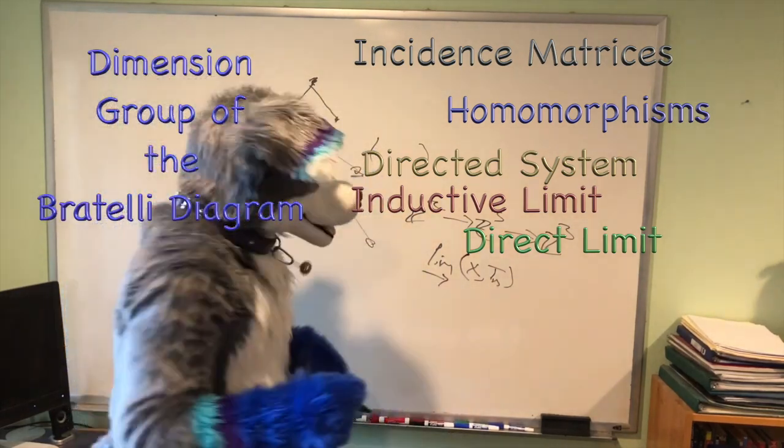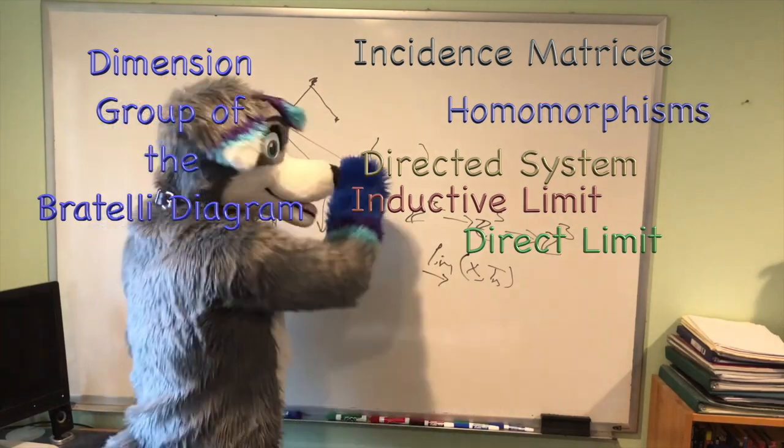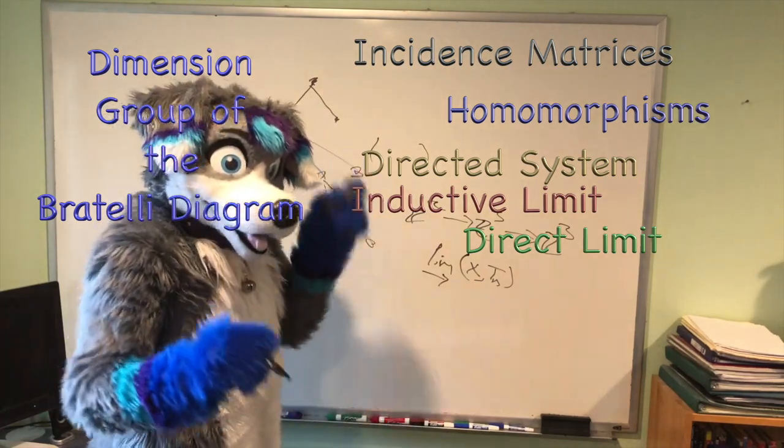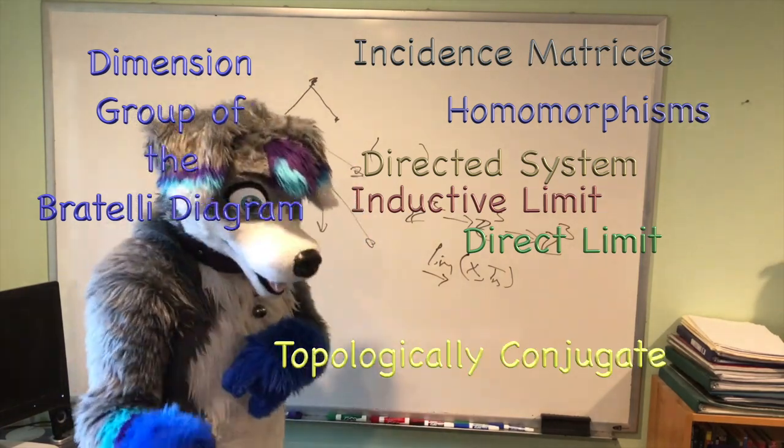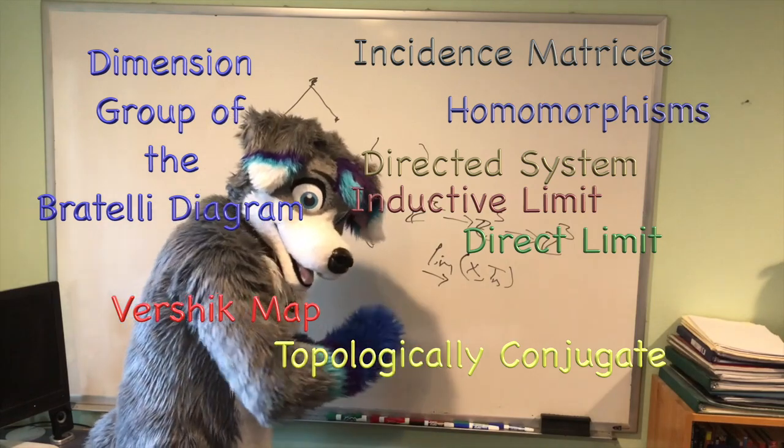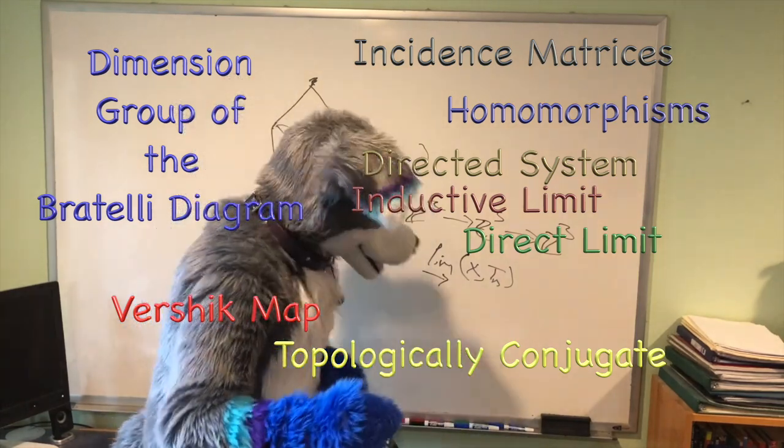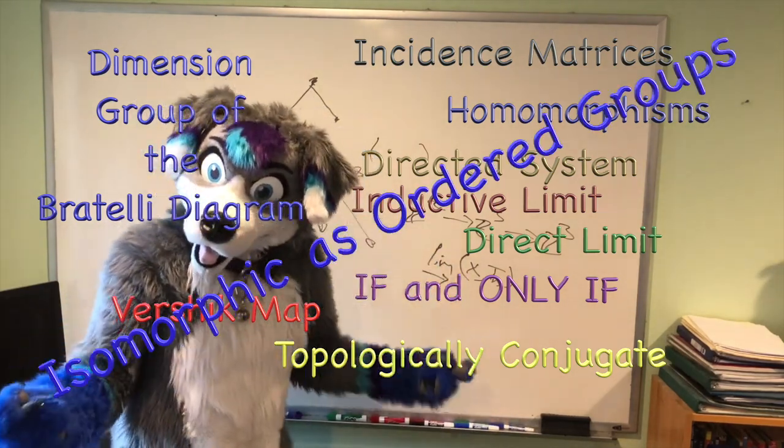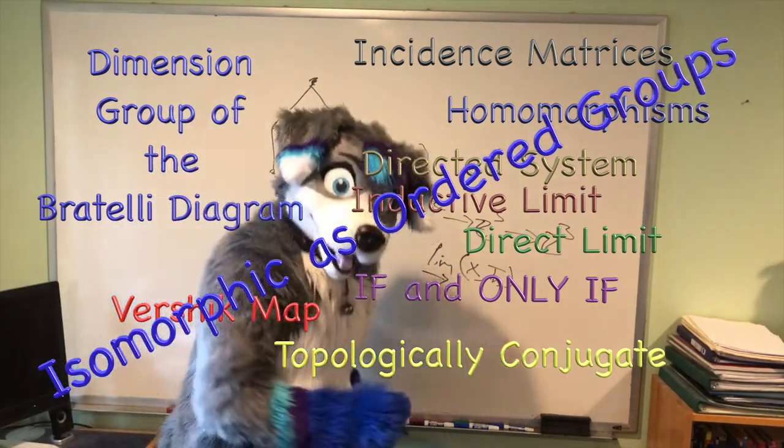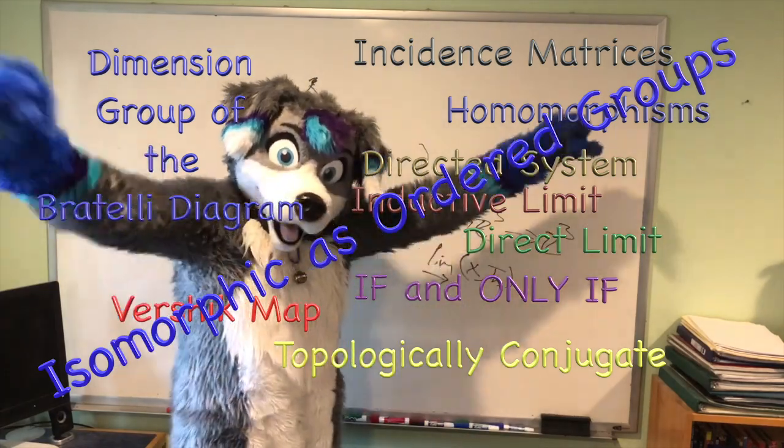Now what's really cool is that two Bratteli diagrams are homeomorphic, or actually even more topologically conjugate once you consider the Vershik map on the Bratteli diagrams, is topologically conjugate if and only if the two dimension groups are isomorphic as ordered groups. Now that's pretty cool.